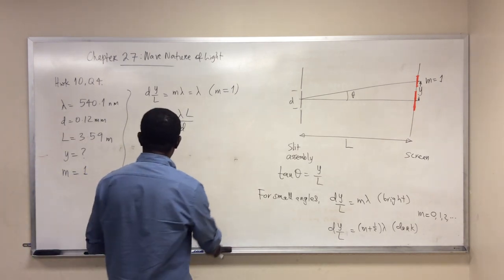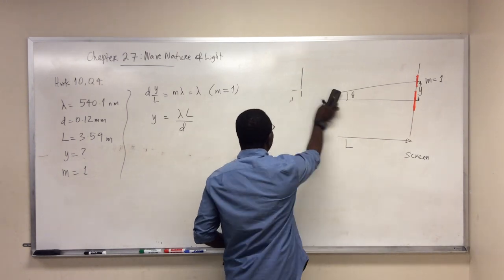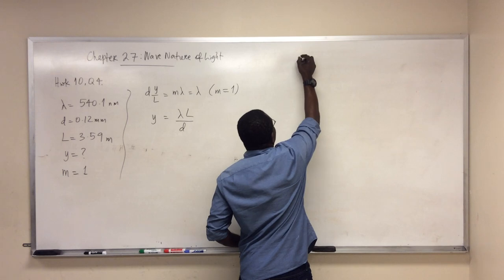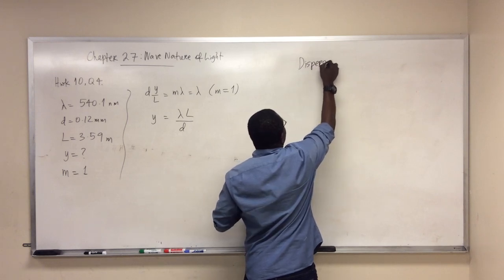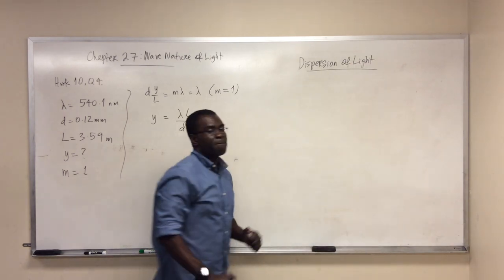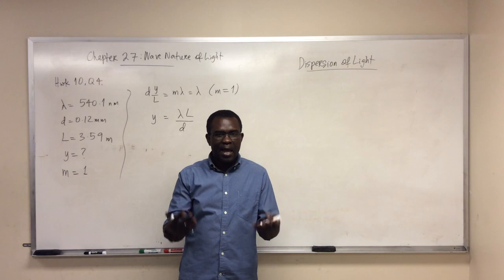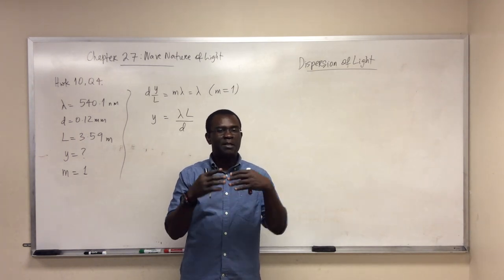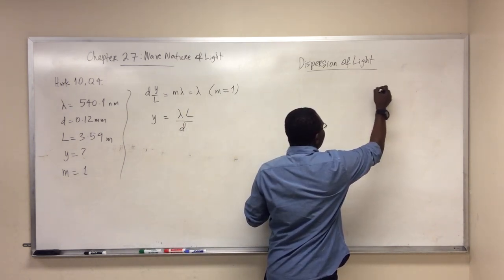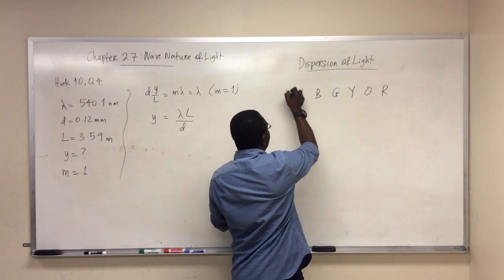I'm going to discuss another aspect of the fact that light is a wave phenomenon — the dispersion of light. Light from the sun, what we normally call white light, turns out to be composed of seven different colors: red, orange, yellow, green, blue, indigo, violet. The violet end is the short wavelength side, and the red end is the long wavelength side — this is the direction of increasing wavelength.